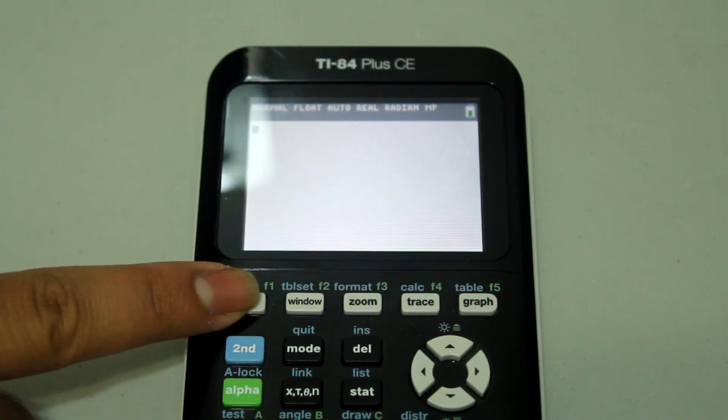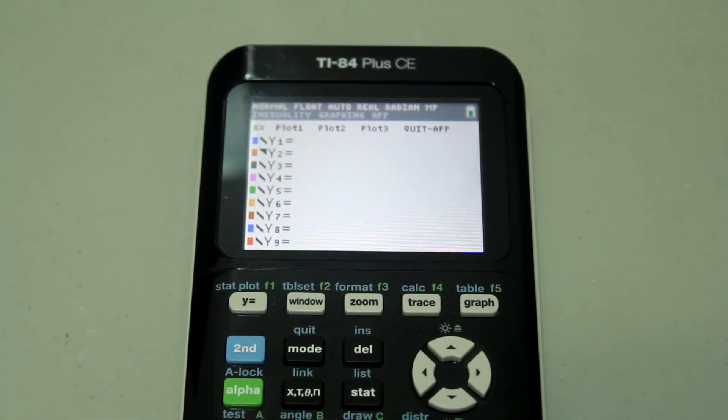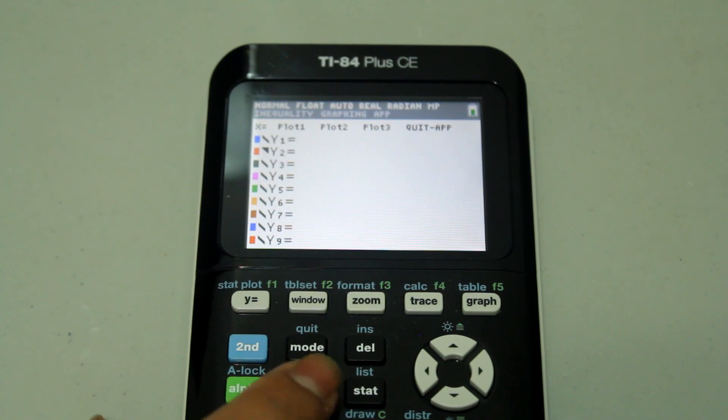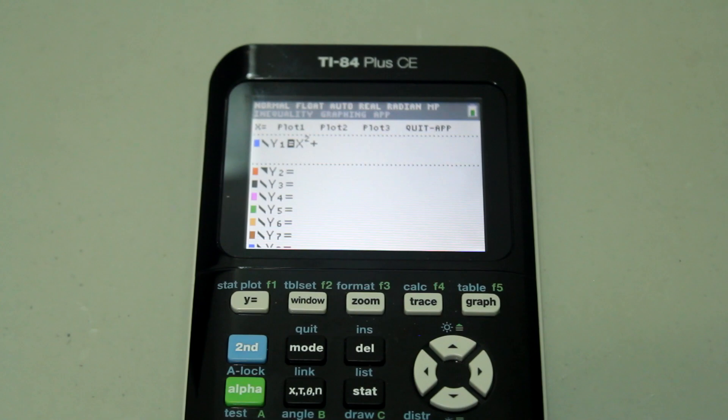First, let's press the y equals button and type in an equation to be graphed. I'm going to do a very simple graph of y equals x squared plus 1.